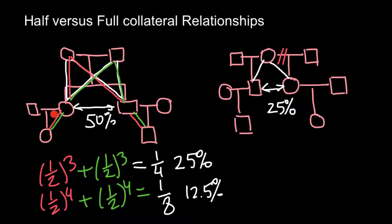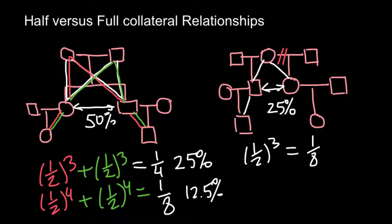Comparing: full siblings share 50%, half siblings share 25%. Now let's find the coefficient of relatedness between a half aunt and half nephew. Adding another line gives us one-half to the power of three — so the coefficient of relatedness is one-eighth, or 12.5%. Compare that to the full niece and uncle relationship, which equals 25% — exactly half of that.